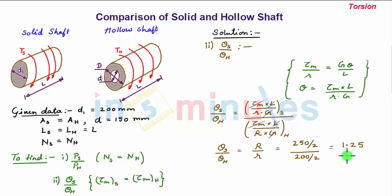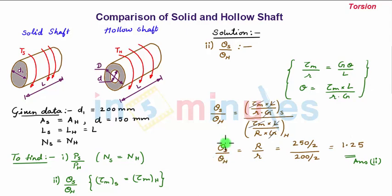This is the second answer. For the same power transmission and same maximum shear stress, the angle of twist in the solid shaft is 1.25 times that of the hollow shaft, meaning the solid shaft twists more. Therefore, the hollow shaft is also more beneficial with respect to the rigidity of the shaft.